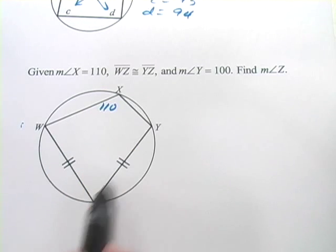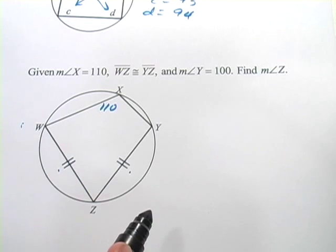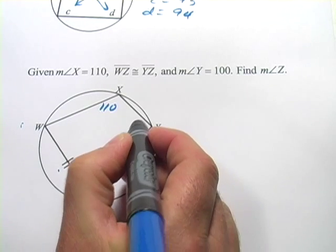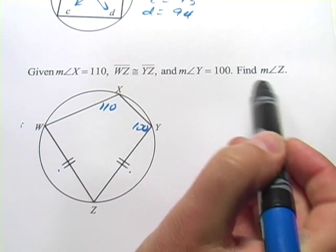WZ is congruent to YZ, that's labeled here. And the measure of angle Y equals 100. Find the measure of angle Z.